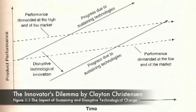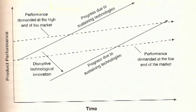This is the basic graph from Clayton Christensen's book that explains a disruptive technology. The existing technology is that top arrow that's solid. It's serving the higher end of the market and eventually providing even more features than the market really demands. A new technology starts up — that's the lower line — that actually has far fewer features and starts out in the niche of the lower end of the market.